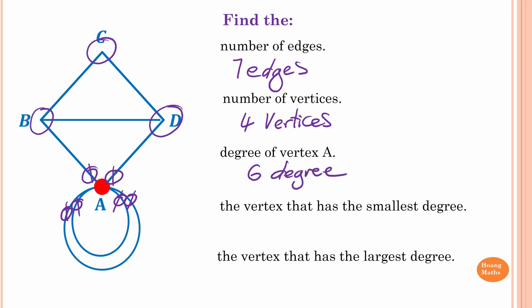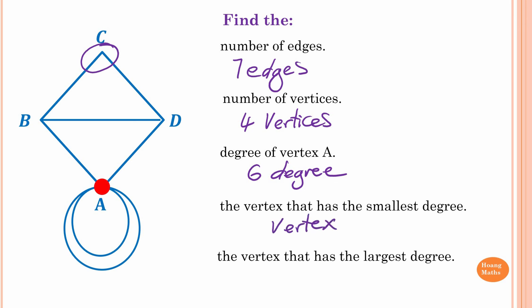To find the vertex with the smallest degree: looking at the network, vertex C has only two degrees while the rest have more than two, so vertex C has the smallest degree. The vertex with the largest degree is vertex A, with six degrees — B has only three, D has only three, and C has two — so vertex A has the largest degree. Thank you so much for watching.